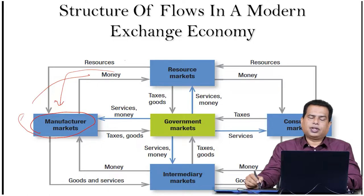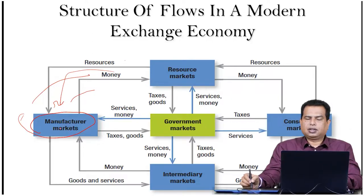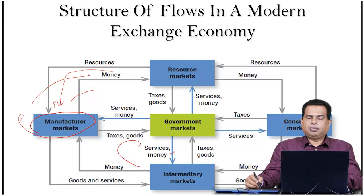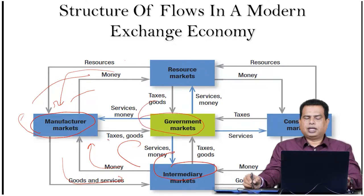In lieu of that, the manufacturer is going to give them money. These manufacturer markets are also linked with the intermediary markets. The intermediary markets' benefactor is going to provide them goods and services, and these intermediary markets are going to give them money. Money also flows from the government markets.